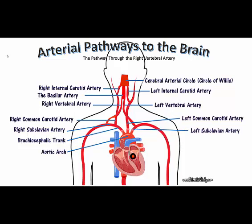Looking at the left side of the body, the pathway is identical except for the brachiocephalic trunk. Oxygenated blood travels through the aorta and then up the left common carotid artery, which branches to form the left internal carotid artery, ending at the cerebral arterial circle at the base of the brain.